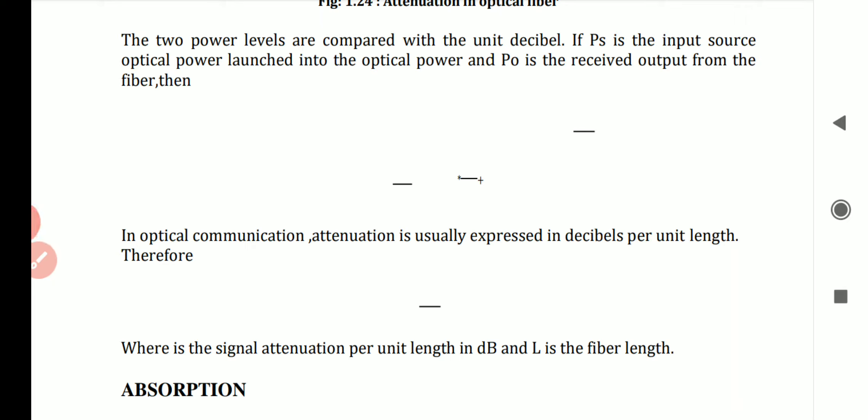In this equation, A is the total reduction in power level, P_out is the cable output power, and P_in is the cable input power. That is all about attenuation, and you should also study one or two problems on attenuation.